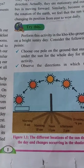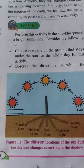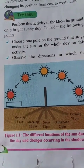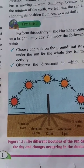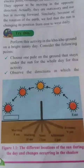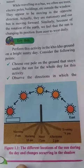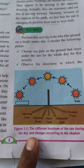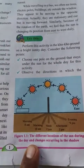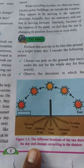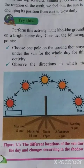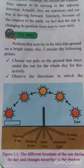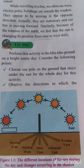Hello students, today we will discuss local time. The local time of a particular place refers to the time determined on the basis of the sun's apparent movement. The time of a place as decided by the location of the sun in the sky is known as its local time.